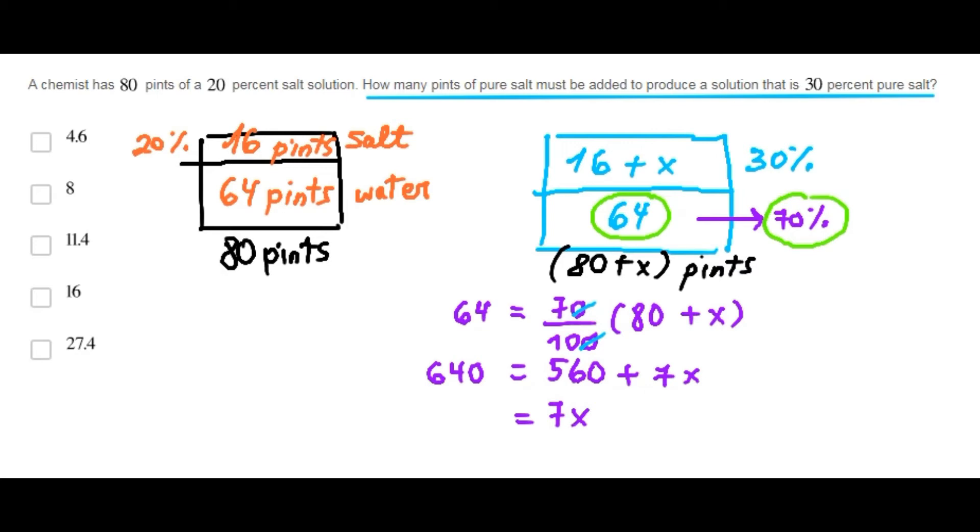7 times x equals 80. Now, solving for x, 80 over 7 is approximately 11.